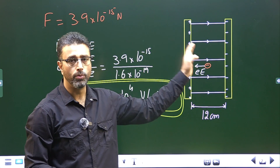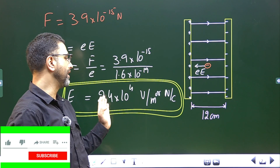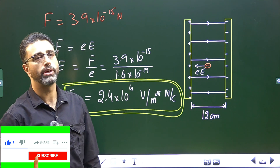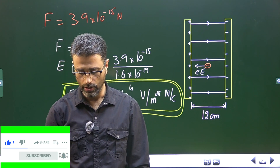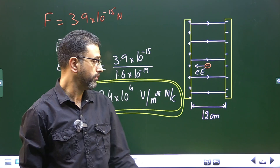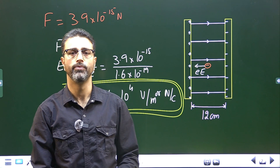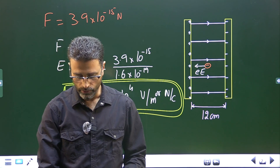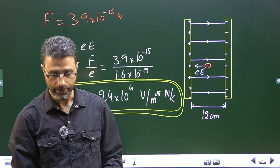So the potential difference is 2.9 × 10³ volts and the electric field between the plates is 2.4 × 10⁴ volts per meter. That's all we are asked to find out, and that is all for this session.